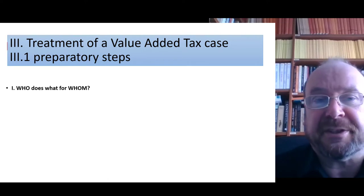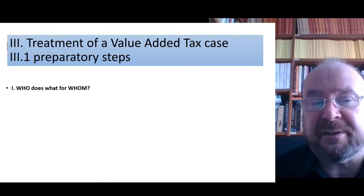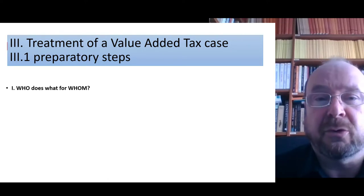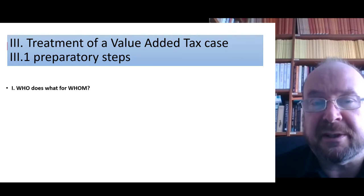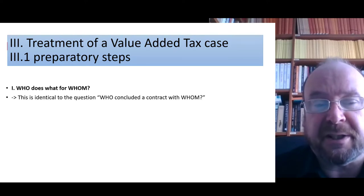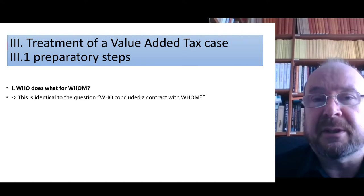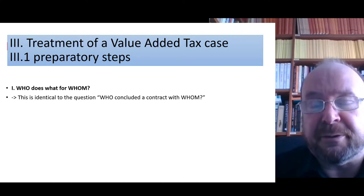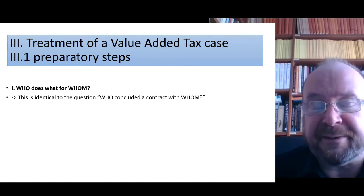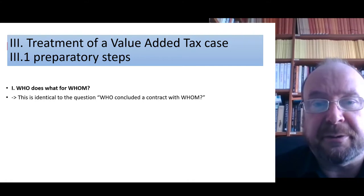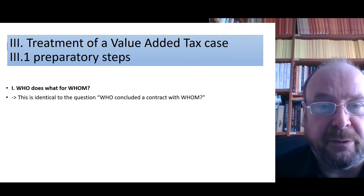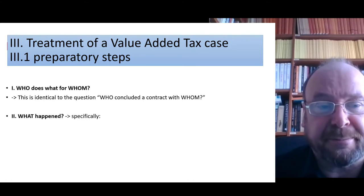The first question is: who does something for whom? Which person is active for which other person? This is usually identical — not in theory, but in practice — to who has concluded a contract with which other person.